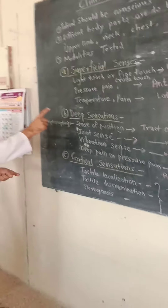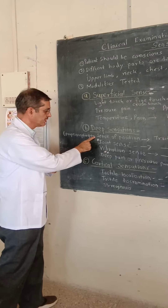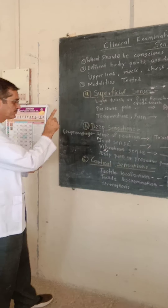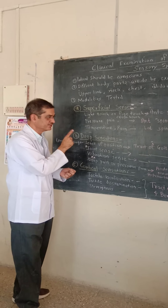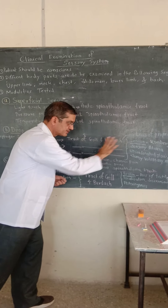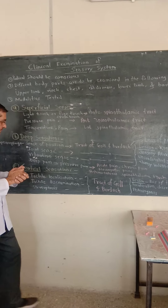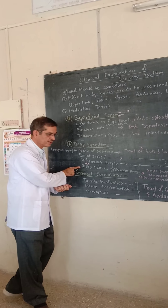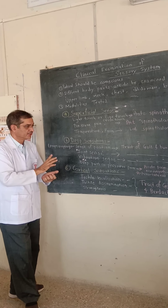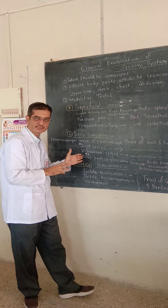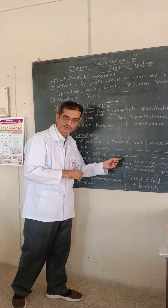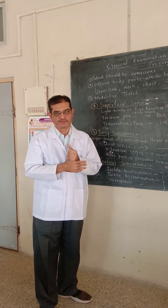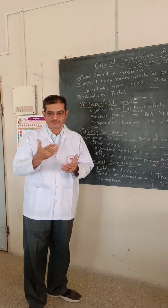To summarize deep sensations: we studied sense of position, also called proprioception, and joint sense. The significance relates to Romberg's sign and sensory ataxia. Then we studied sense of vibration and deep pain or deep pressure. All these deep sensations are carried by the tract of Goll and Burdach. It is essential to know this tract in detail.